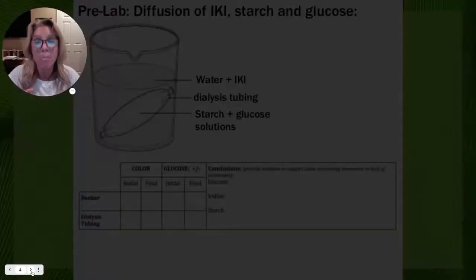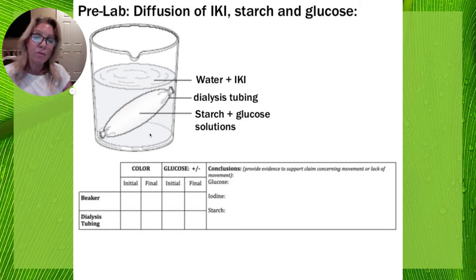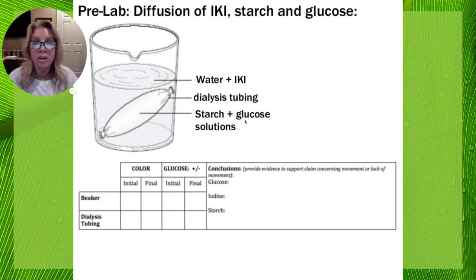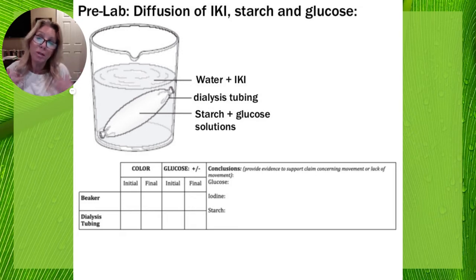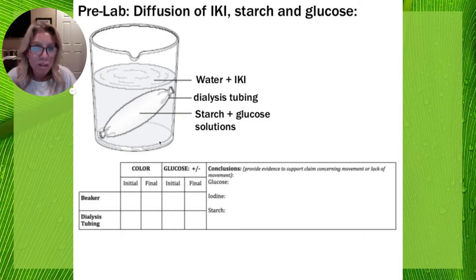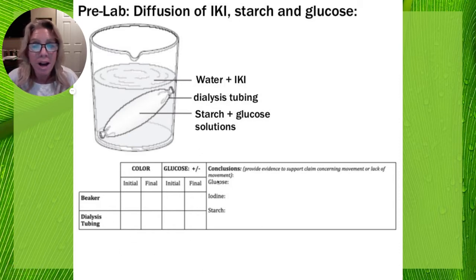That sets us up for the first part of this pre-lab, where you're going to put some water and iodine in a beaker. Then in dialysis tubing, you're going to put a little bit of starch and a little bit of glucose. You should know from our four important organic molecules that glucose is a monomer and starch is a polymer, so glucose is smaller. You can make predictions: do you think glucose will be able to get out of the bag? Will starch? Can water or iodine get in? A data table is already set up to record that information.